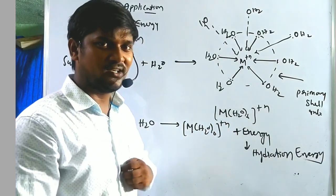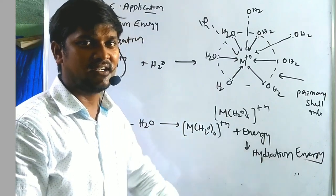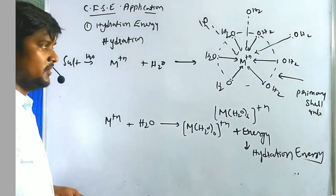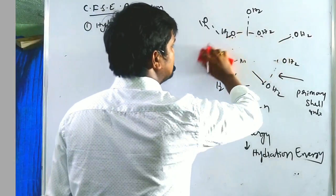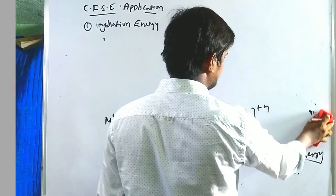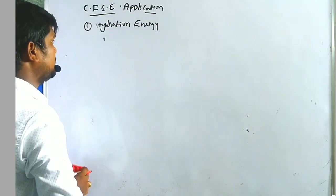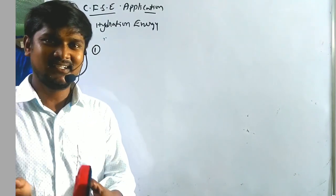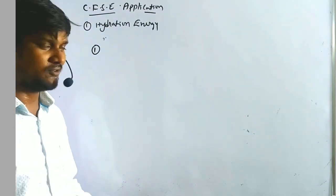Before going further into hydration energy, we are dealing with how the trends of hydration energy work in the periodic table — from left to right, and what happens top to bottom in groups. The first point: atomic radius decreases across the periods from left to right.